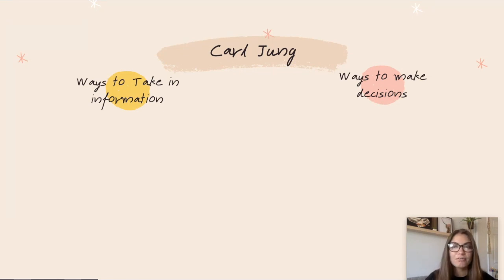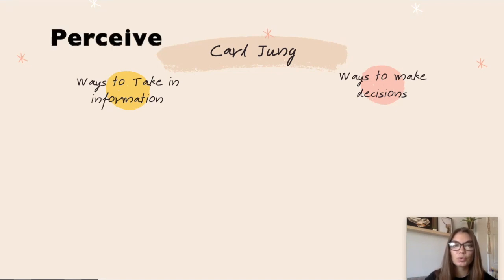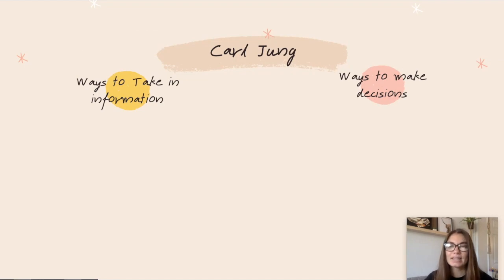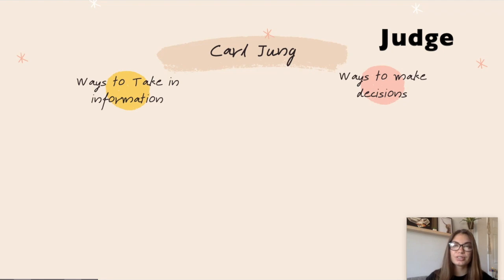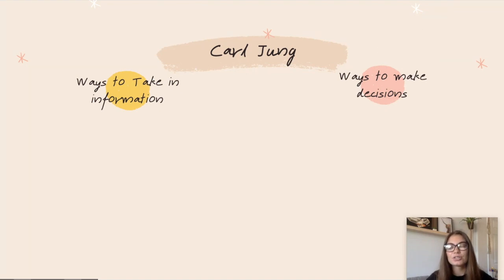In the 1920s, Carl Jung realized that we have ways to take in information — basically the way we learn and what information we're attuned to — and then we also have ways to make decisions. That's kind of where our 'should' statements come from: what should we do, what's the best course of action, how you determine the actions you take.